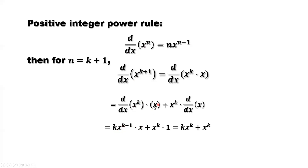Then times x, plus x to the power k times the derivative of x, which is 1. Simplifying, we have k times x to the power k plus x to the power k. Here the coefficient is k and here it is 1, so putting them together gives k plus 1, times x to the power k. And x to the power k is equivalent to x to the power k plus 1 minus 1.